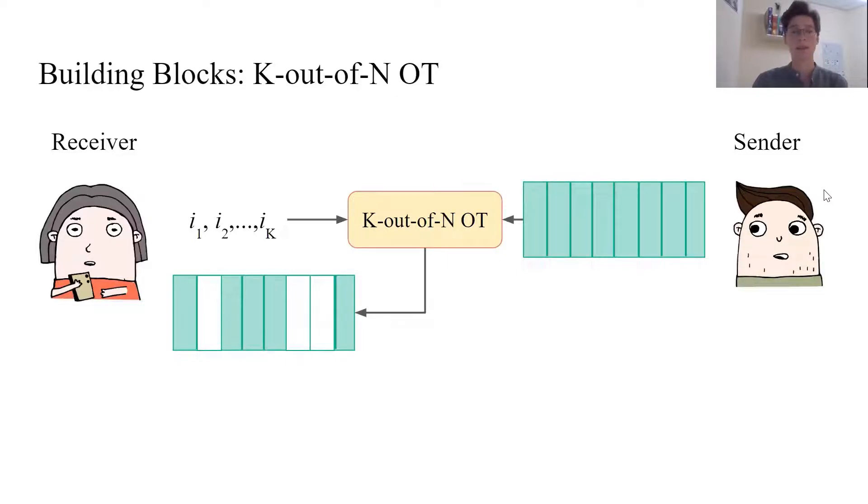The second building block is K out of N oblivious transfer protocol. It allows the receiver to secretly pick K values out of N, which the sender provides. The sender has no information about the choice, and the receiver obtains only chosen values, but nothing more. In our protocol, we use this building block to limit each party in receiving numbers in GBF of other parties. We utilize the efficient approximate random K out of N OT protocol of Rindal and Rosulek. We did the refinement parameter analysis for it, which results in up to 25% optimization there, and also gives stronger security guarantees.